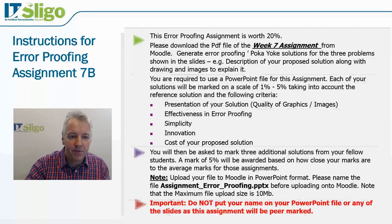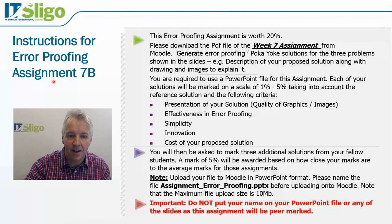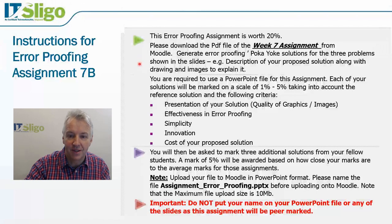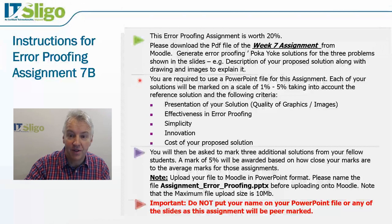Assignment 7b is more challenging — it's worth 20%. There'll be a PDF file of the lecture notes on Moodle, and your challenge is to generate error proofing solutions for three problems shown on the slides, using descriptions of the problems with drawings and images to explain your solutions. You have to use a PowerPoint file for this assignment.